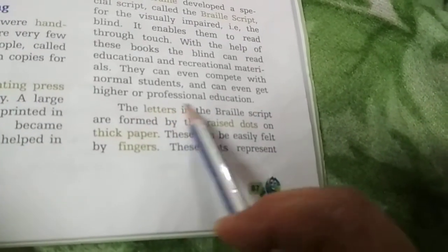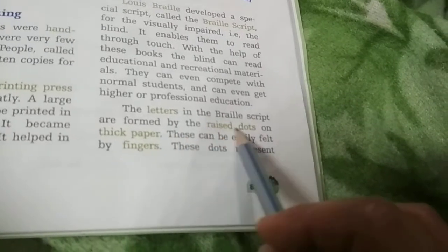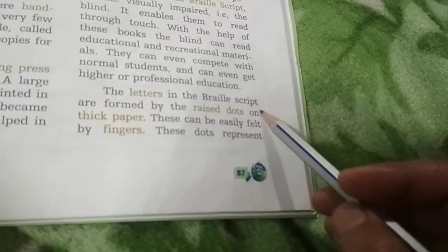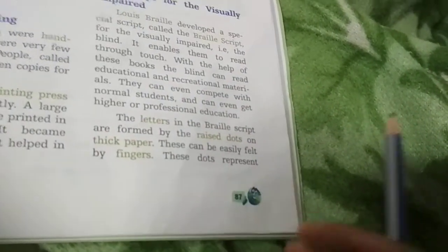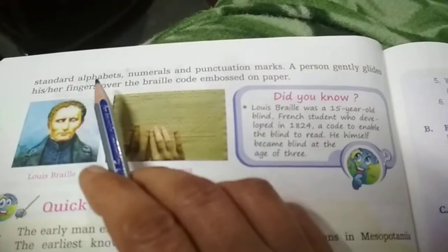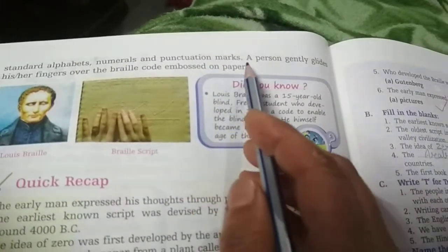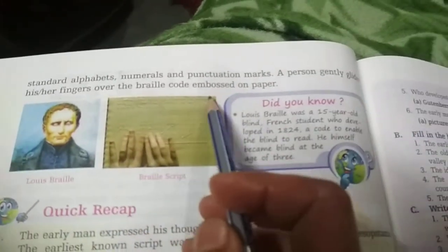Blind students can also pursue higher or professional education. The letters in the Braille Script are formed by raised dots, which can be easily felt by fingers. These dots represent a standard alphabet, numerals, and punctuation marks.